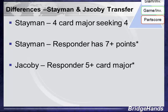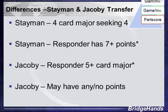With the Jacoby system, the responder has a five-card or longer major suit — with a small exception for transfers to minor suits covered in another lesson. Crucially, the responder may have any number of points, or no points at all. Playing one no trump with 15 to 18 points, responder can do a Jacoby transfer with as few as zero points.